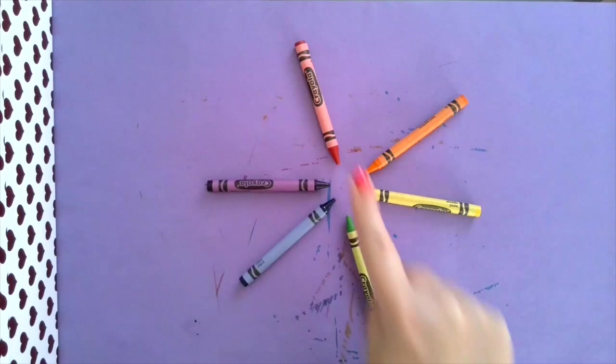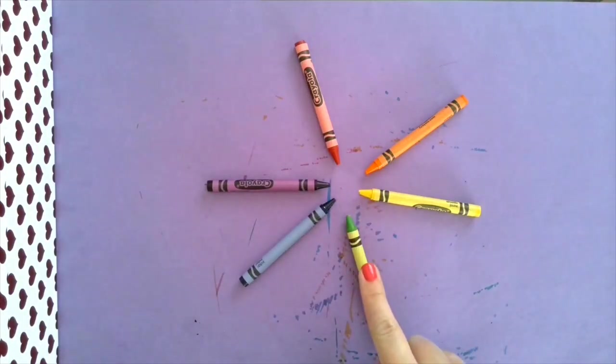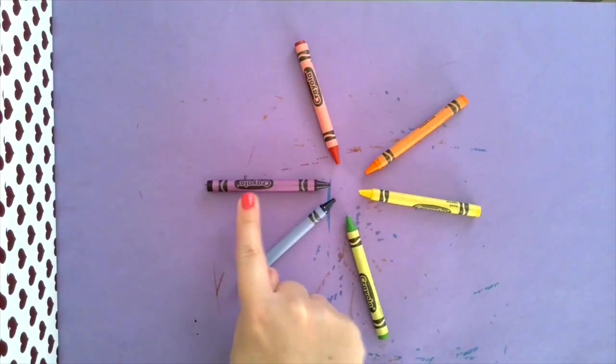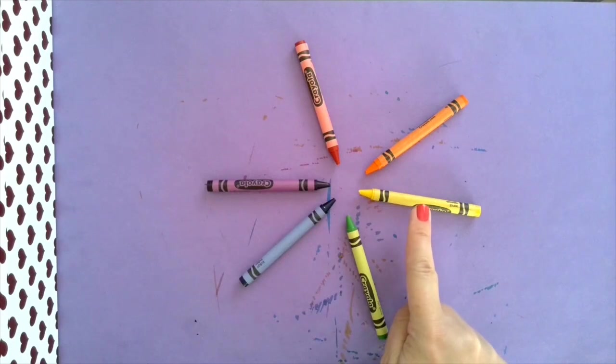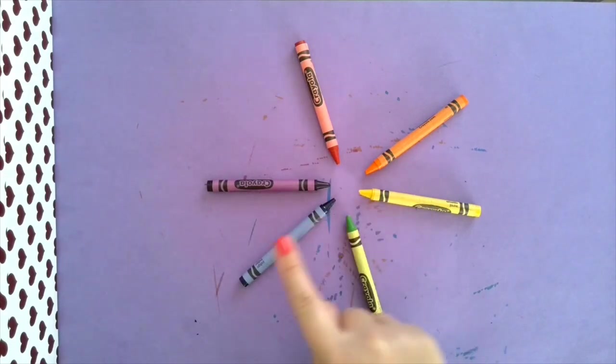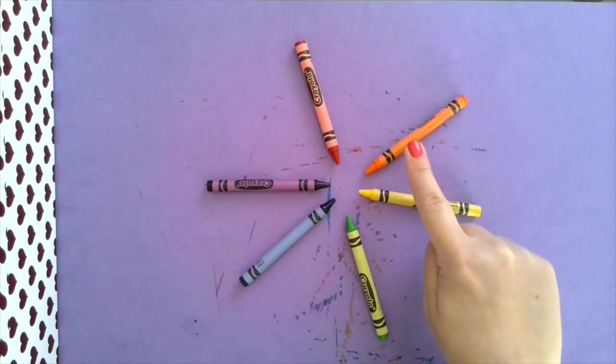So red paired with green are complementary colors, purple and yellow together are called complementary colors, and blue and orange are complementary colors.